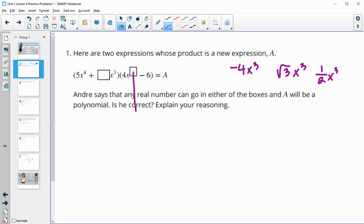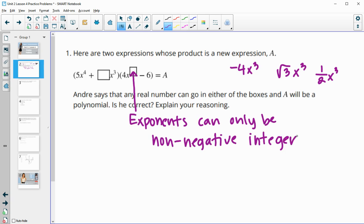Now this one is an exponent. In polynomials, exponents have stipulations. Exponents can only be non-negative integers, which are non-negative whole numbers. There can't be any decimals, it can't be negative, you can't have square roots. So he cannot just put any number in since one of the boxes is an exponent.